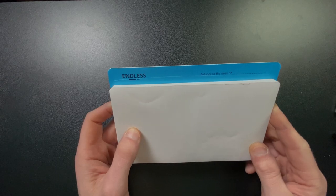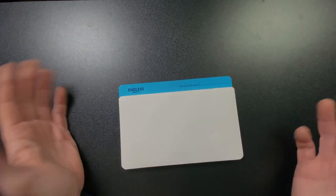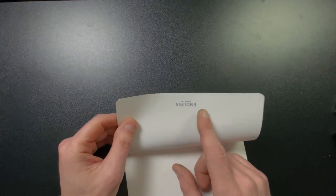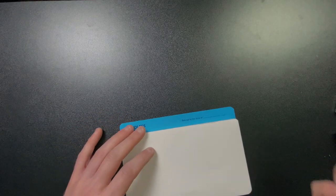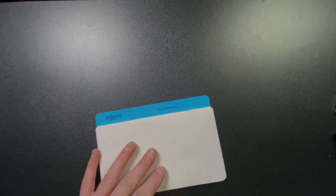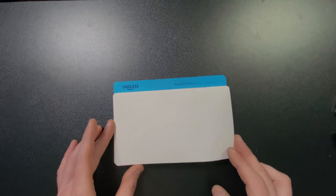You can even see it says belongs to the desk of blank. And it's really good fountain pen friendly paper. You can rip it off. And it's nice too that the logo is actually on the back of the pad. So when you're writing, you don't have that logo in the way. And if you rip it off though, it'll be on the back side. So quite nice.